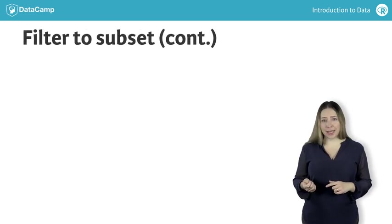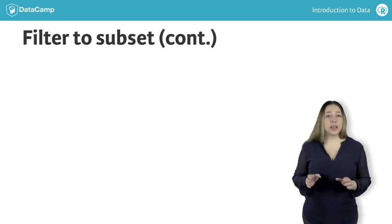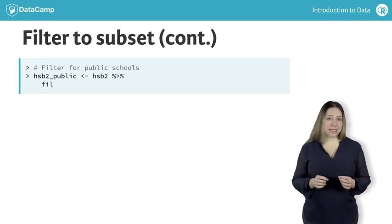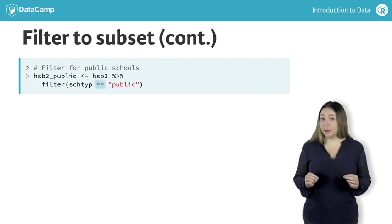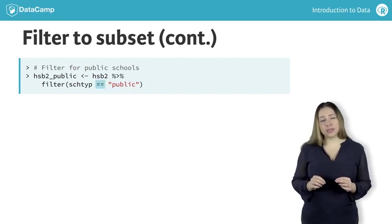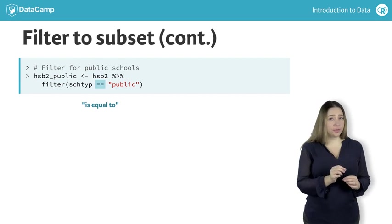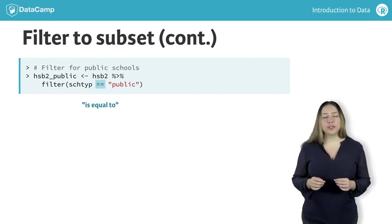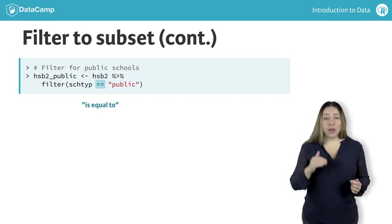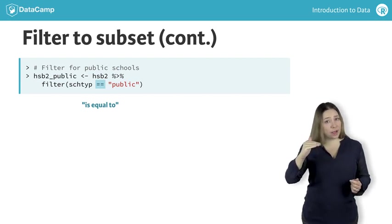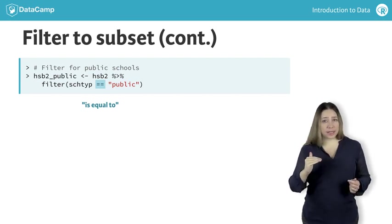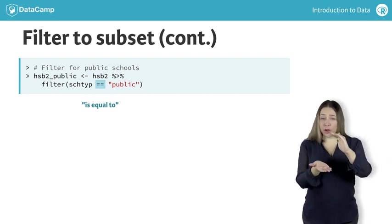Returning to the task at hand, we should take note of another piece of R syntax: the double equal sign. This is the logical test for is equal to. In other words, we first determine if school type is equal to public for each of the observations in the data set, and filter for those where this is true.